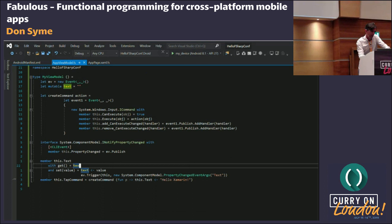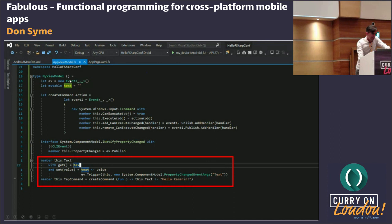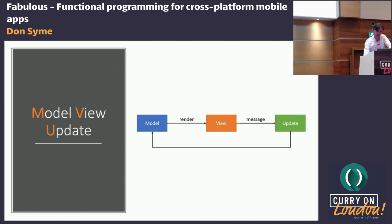You can do MVVM in F-Sharp if you want. The code ends up looking pretty ugly — you have some mutable state, a view model, and binding code doing the object-oriented thing in F-Sharp. F-Sharp is actually a great object-oriented language, but MVVM doesn't make it feel great. It's just still kind of awful.